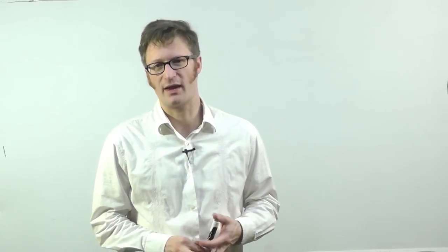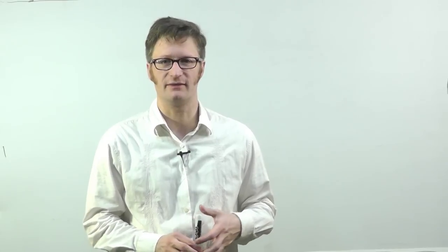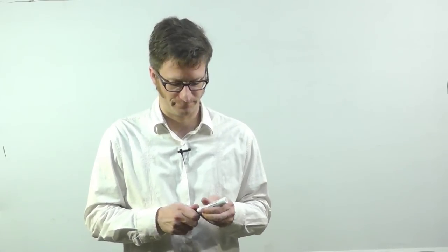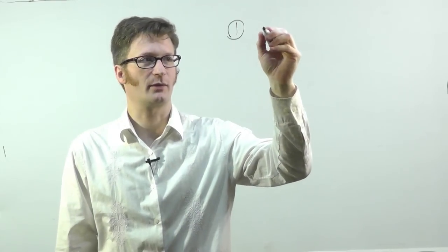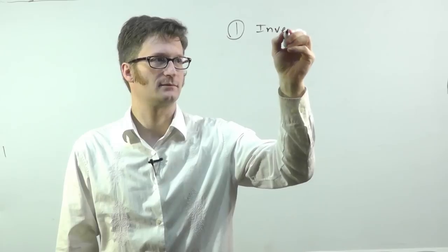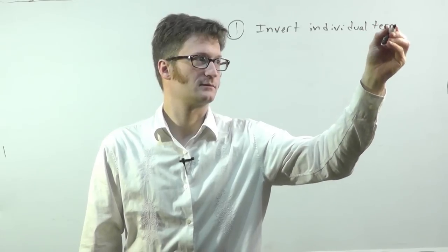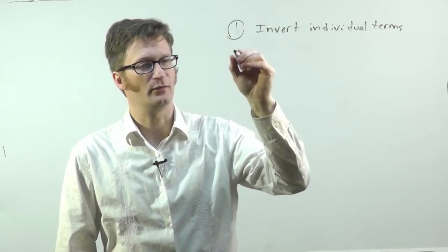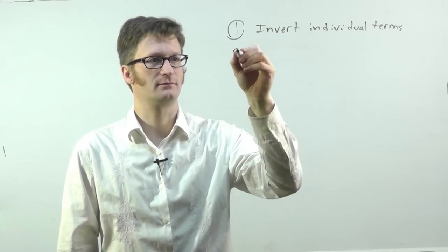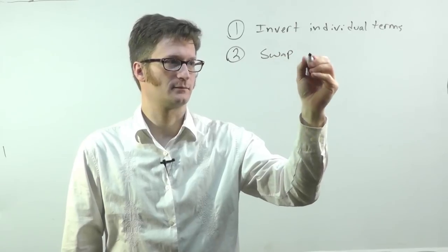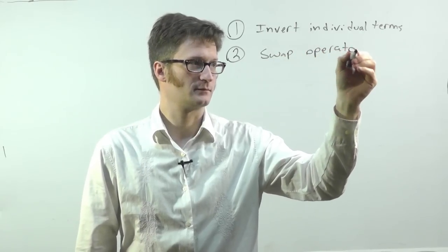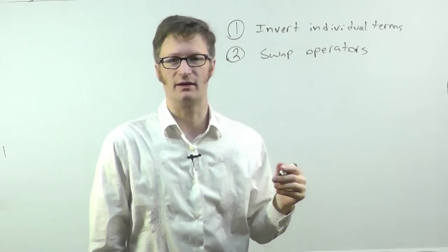Let's go over De Morgan's Theorem, which is a way of converting a logic formula into a maybe more useful formula. De Morgan's Theorem says that you can convert a formula into an equivalent one by following these three steps. The first one is invert the individual terms. The second thing is to swap AND for OR and vice-versa. And finally, the third thing is to invert the entire expression.